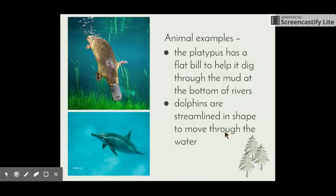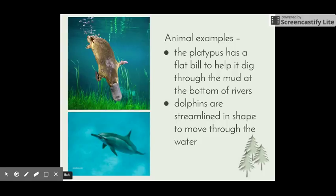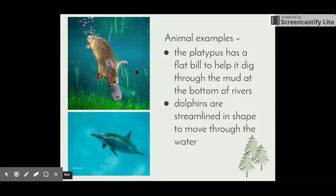Two Australian animal examples: the first is the platypus, quite a unique organism. It has a very flat, strong bill, which it uses to dig in the mud of riverbeds to stir up food. It also has a very flat and broad tail which helps it steer through water, and quite sharp claws to help it dig and to protect itself from predators.